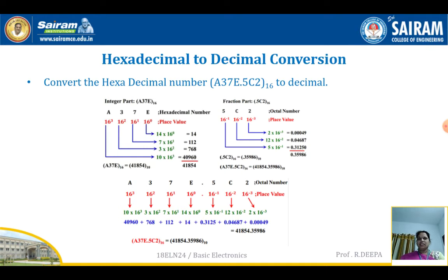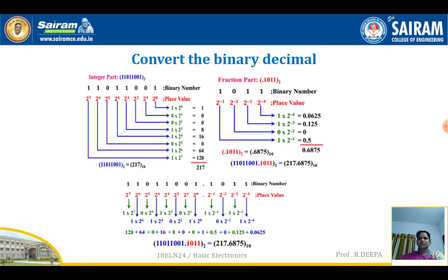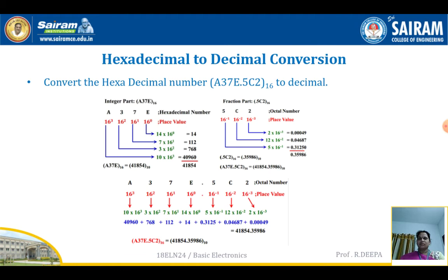Let us start with an example of how to convert a hexadecimal number into decimal. The given hexadecimal number is A37E.5C2. This is a hexadecimal number and you need to convert this into decimal.